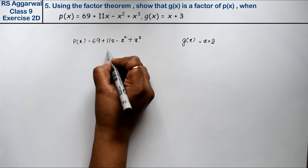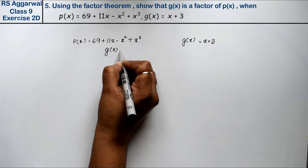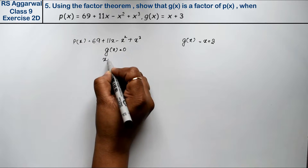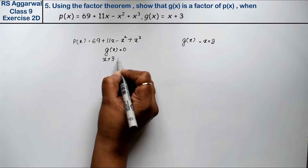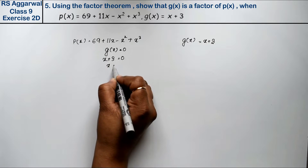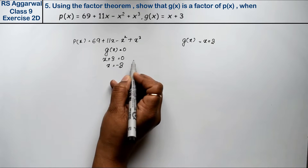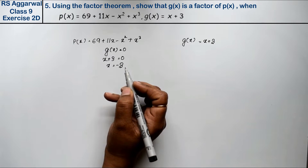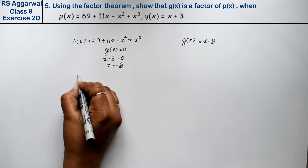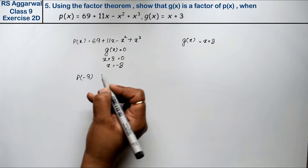We use the factor theorem according to g(x). We set g(x) equal to zero, so x plus 3 equals zero. Therefore x equals minus 3.